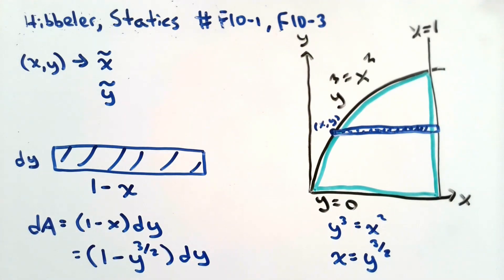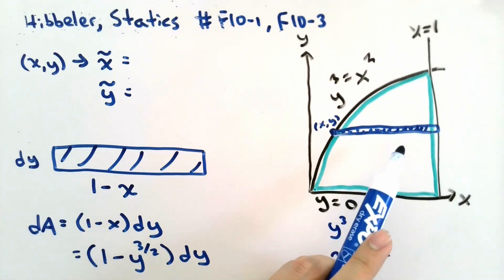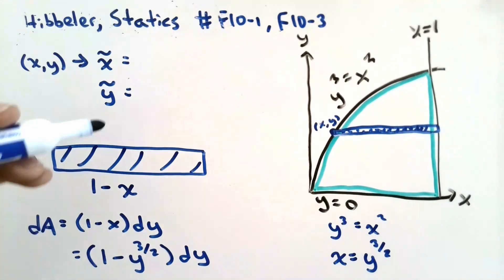So we have an expression for dA. But now we also have to find the coordinates of the centroid, x squiggly and y squiggly. In this case, the centroid of this differentially small rectangle will be located at my y coordinate. So y squiggly equals y.